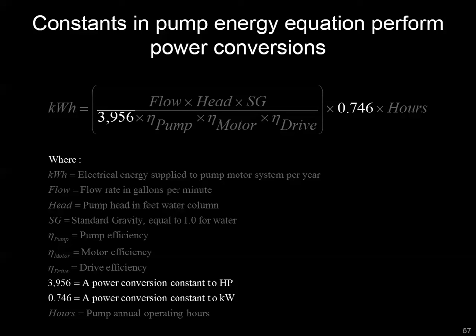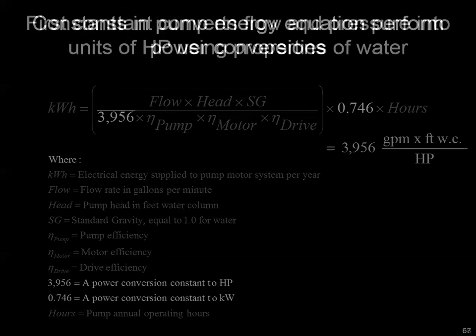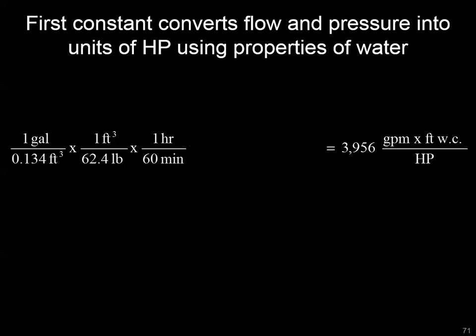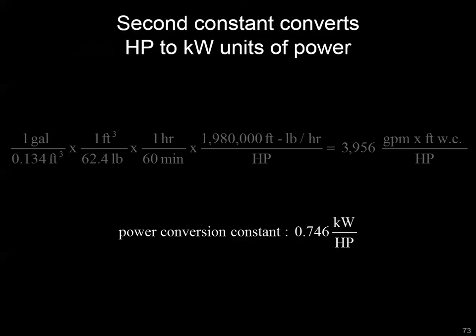There are a few constants to cover briefly. The first is 3956, which is a conversion between GPM and feet of water column to horsepower. It's derived from: a volumetric conversion (1 gallon = 0.134 cubic feet), a weight conversion for one cubic foot of water, a time conversion to use GPM, and a power conversion from foot-pounds per hour to horsepower. The second constant is simpler: 0.746, which is a straight conversion from horsepower to kilowatts.